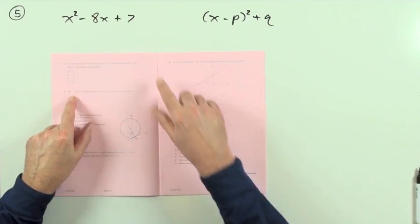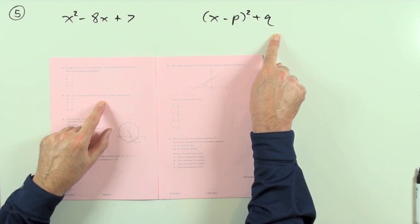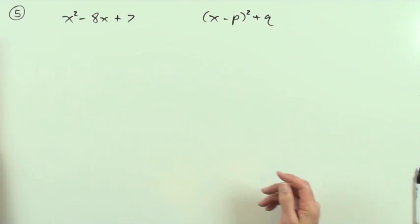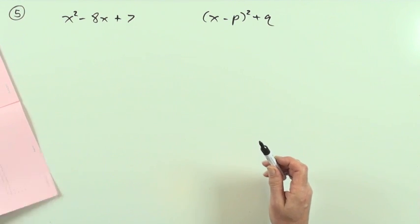Number 5. If this quadratic is to be written in this form, a completed squared form, what's the value of Q? Notice that's a positive, it keeps it simple in this case. Four to choose from. Well, complete the square.